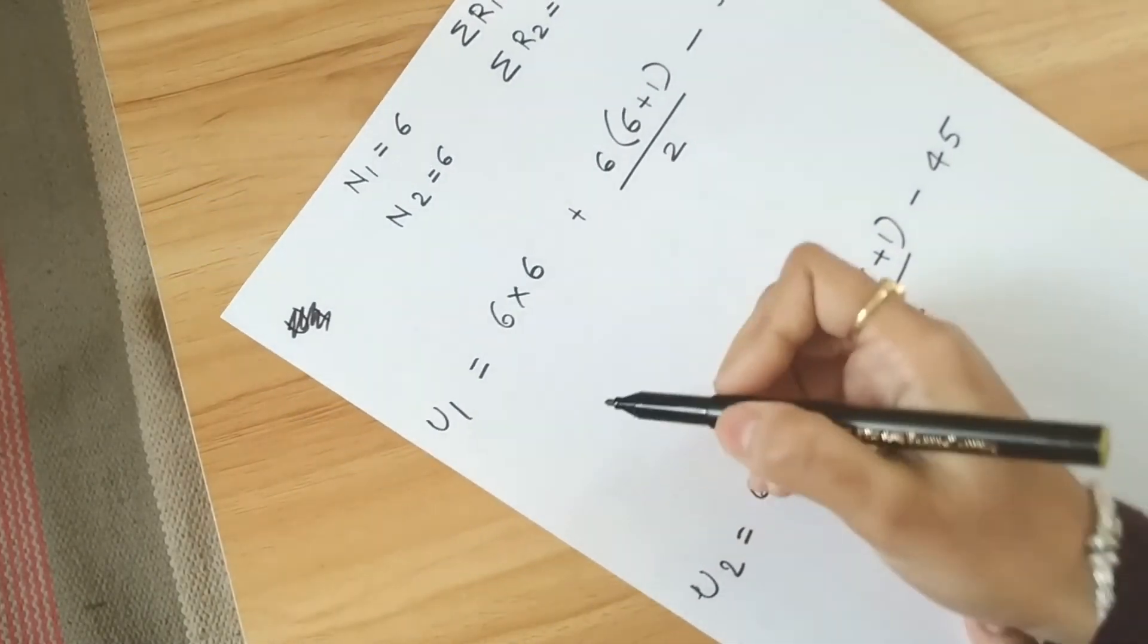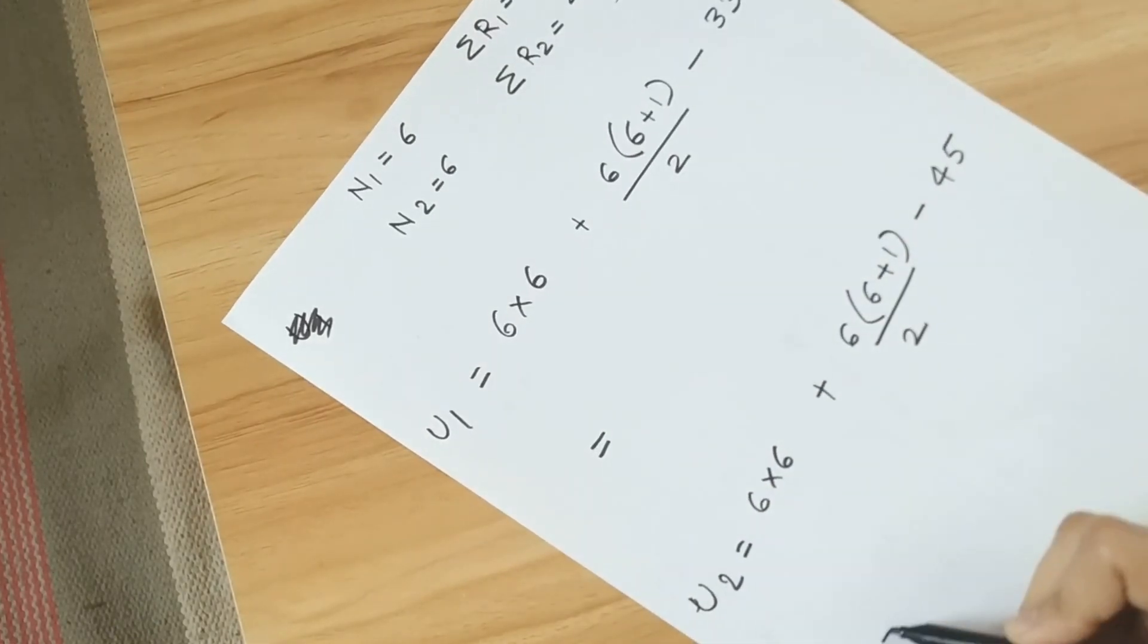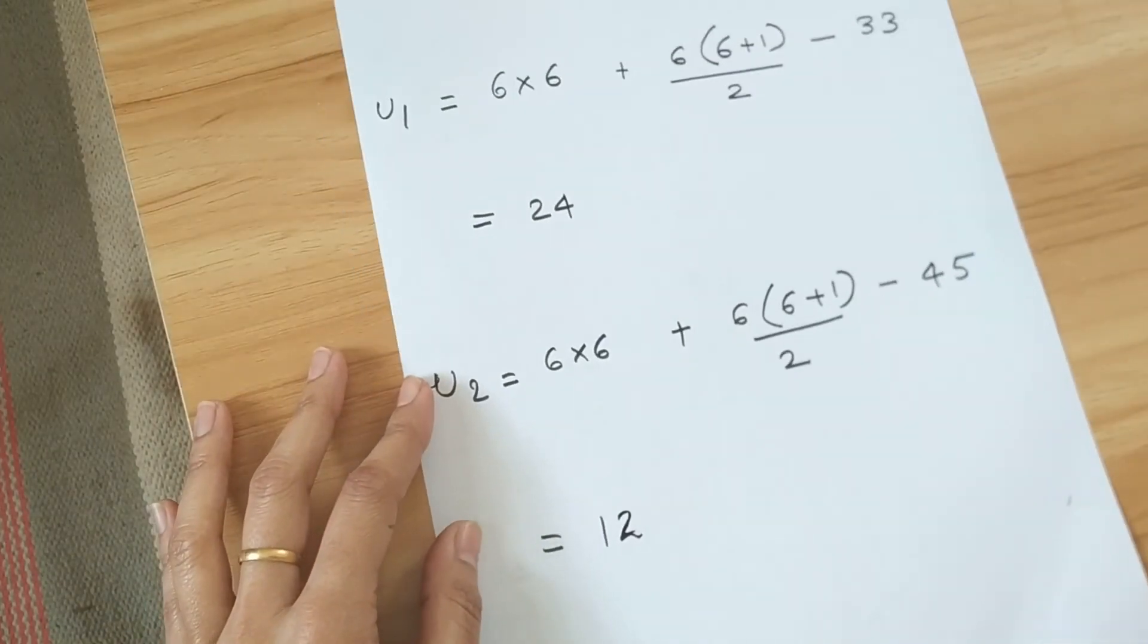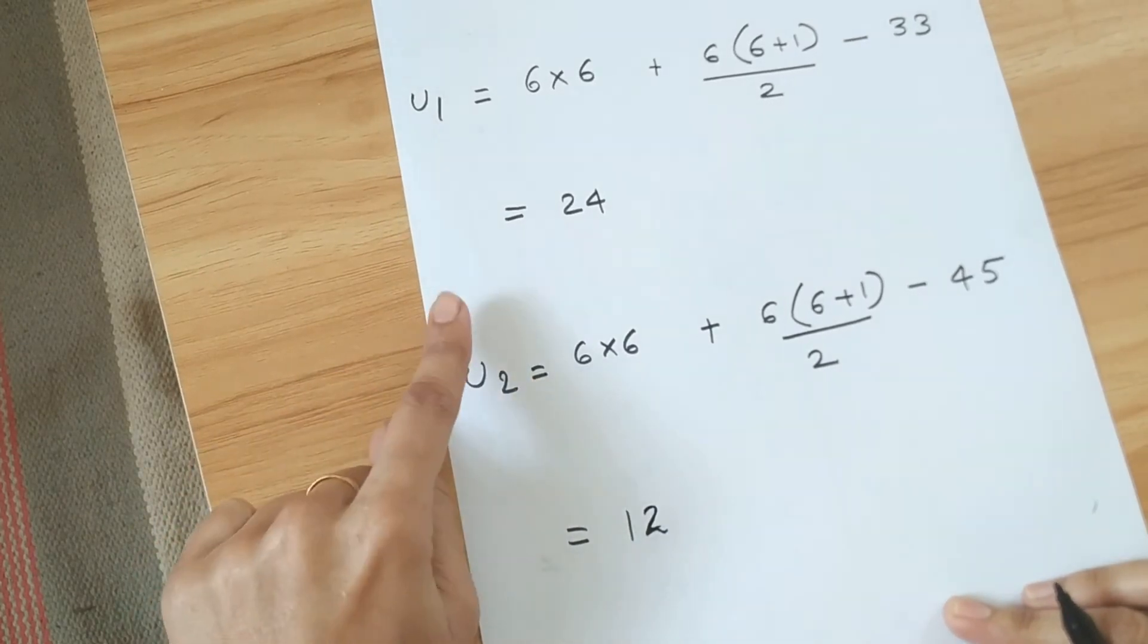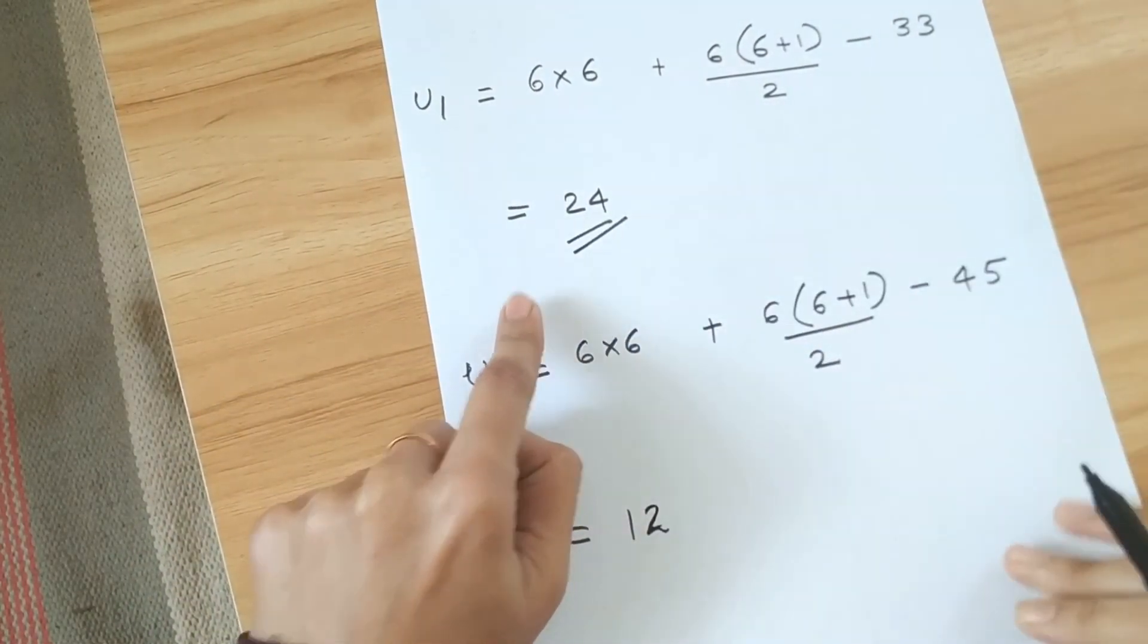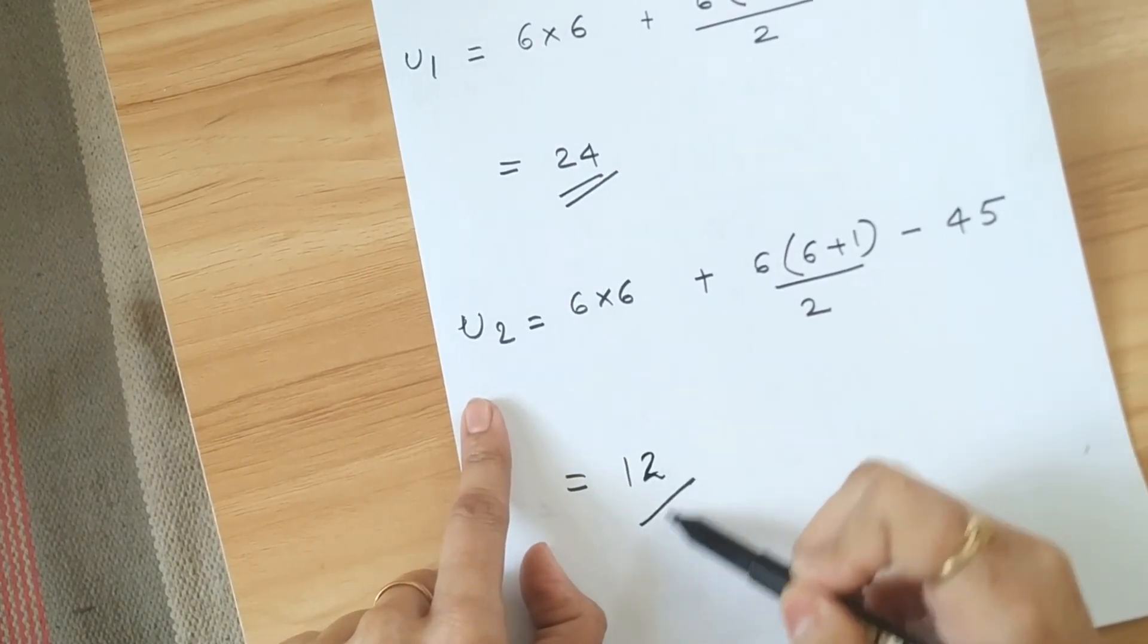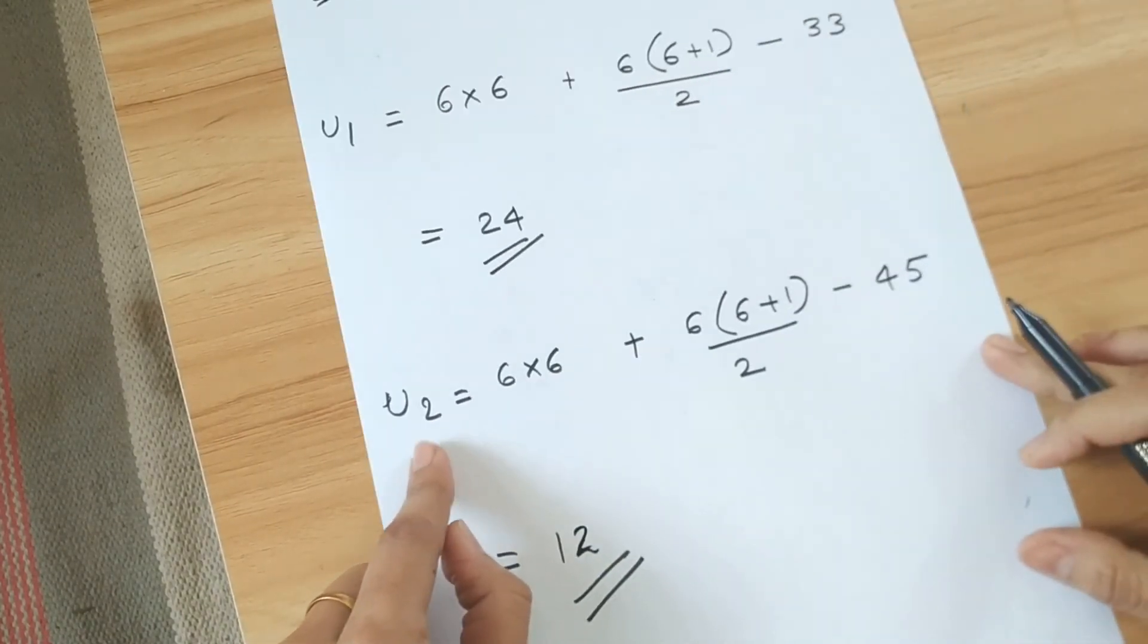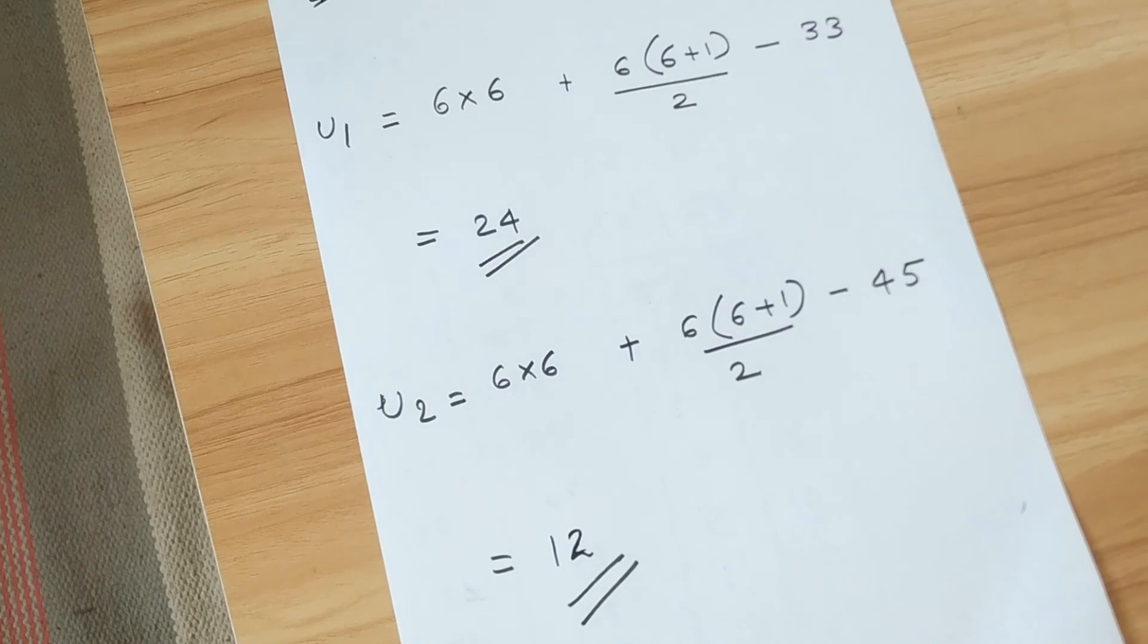So we calculate both the values here. So the value of your U1 is 24 and value of U2 comes out to be 12. This is the Mann-Whitney U test.